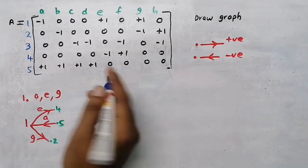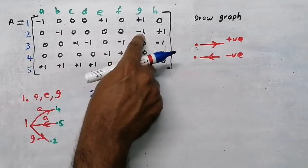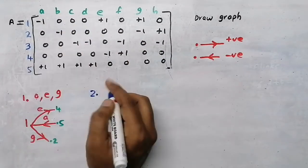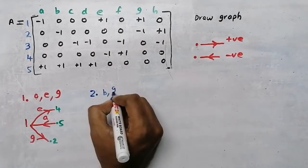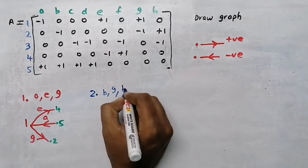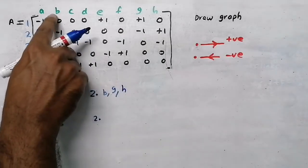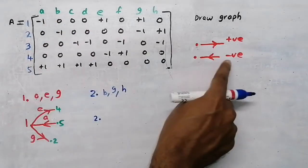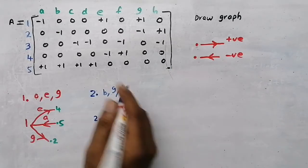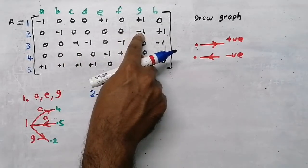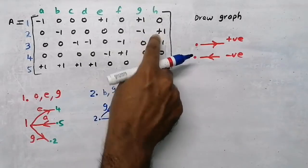Now I am going to take the second node - node 2. Look at the row: here there is minus one, here there is 1, here there is 1. So branch b is there, then branch g is there, then branch h is there. Branch b is negative one - negative means branch is coming to the node. Branch g is also negative, so g is also coming to the node.